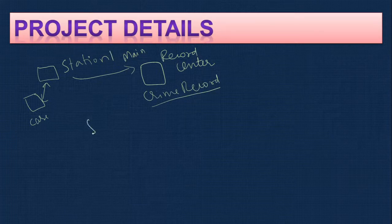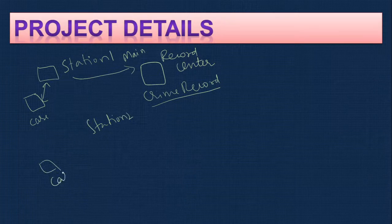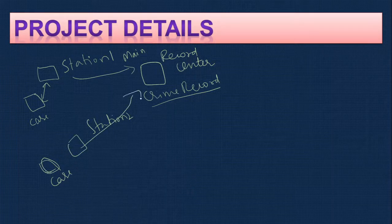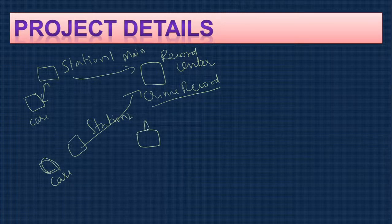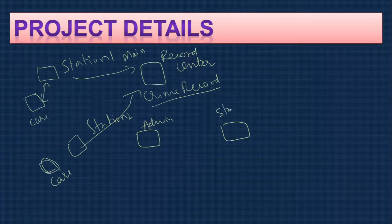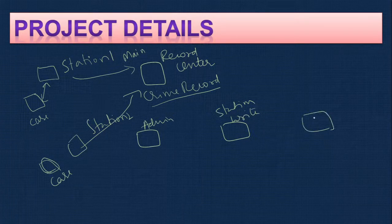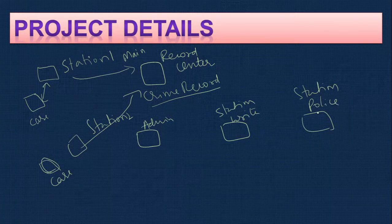Similarly, if you have a station two, cases will be registered there and transferred from that station to the center. So we have complete control on the cases and what is happening in each station. Apart from this, to make it a complete project, we need to provide an admin section and then police station roles. There are two types: one is the writer, who registers the case, and the other is the station police, who can view the data — for example, an inspector.